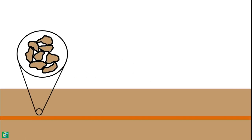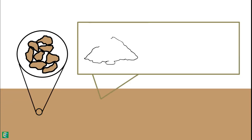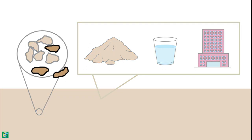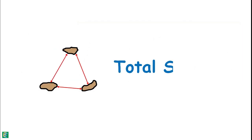Soil particles in a soil mass experience a weight of everything above them, which includes the weight of all the soil particles above them, weight of water, and weight of structure if present. Because of that, soil particles experience stress in between each other, which we call total stress.